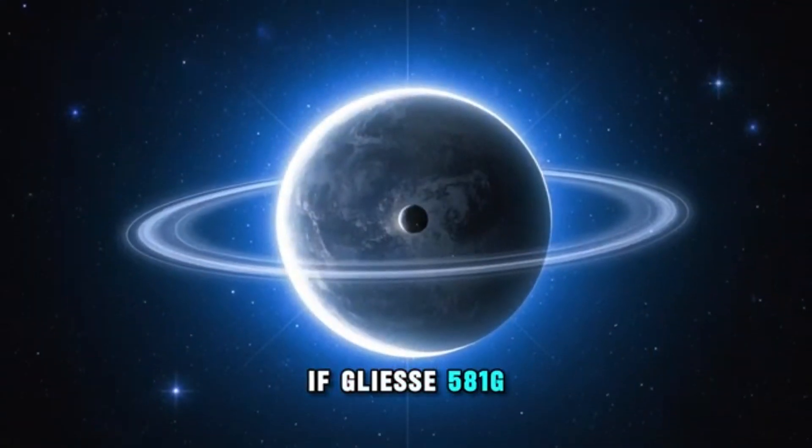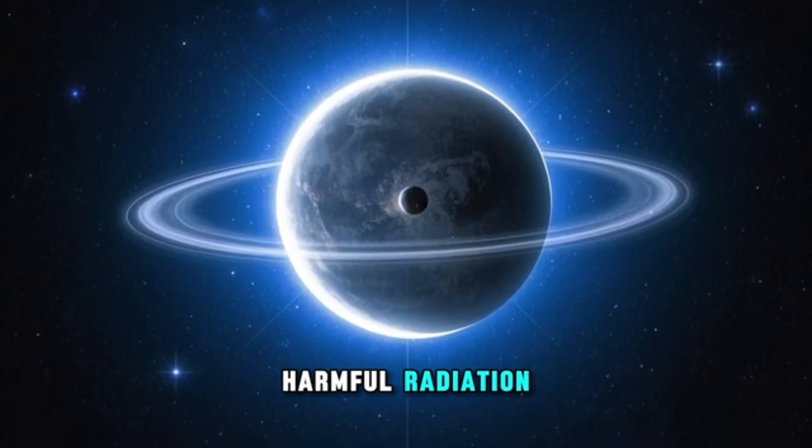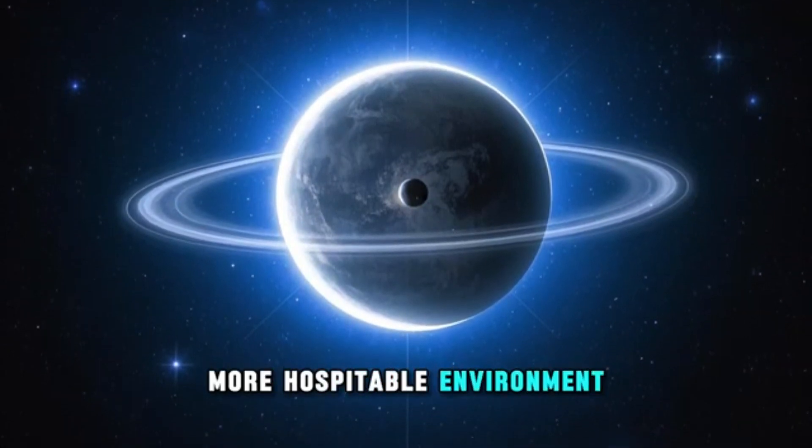If Gliese 581g has a magnetic field, it could help to shield the planet's surface from harmful radiation, making it a more hospitable environment for life to thrive.